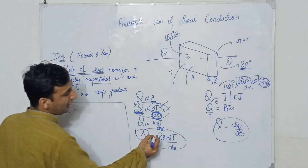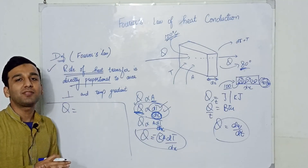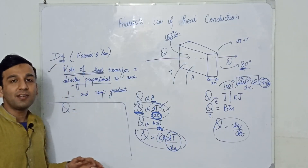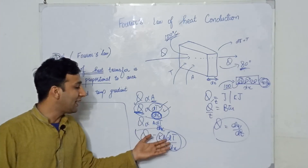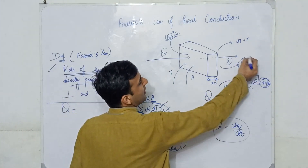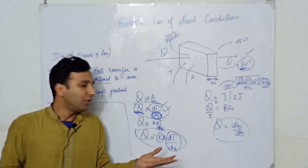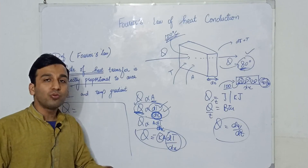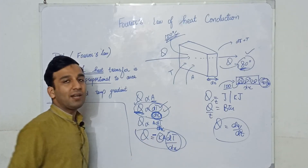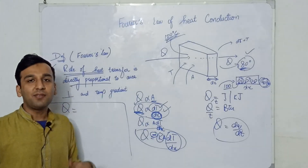In the mathematical form and in the literature, you will see a negative sign in Fourier's law. This negative sign is due to the temperature gradient. When you write delta T as T2 minus T1, since T2 is always less than T1 in the direction of heat flow, you always get a negative value. So we add a negative sign to compensate, so that we get heat Q as a positive value.